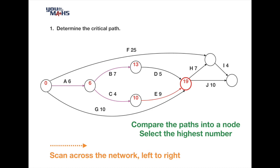The same process applies to the remaining two circles. At the conclusion of tasks F and H, two paths feed in: task F gives 25 days, and the path through task H gives 19 plus 7 which is 26 days. The highest is 26. For the final circle, along task I: 26 plus 4 equals 30, and along task J: 19 plus 10 equals 29. The highest is 30, so the minimum completion time is 30 days.